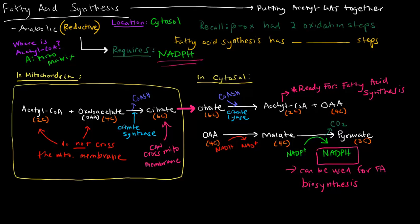These acetyl-CoAs are going to be put back together to be made into a fatty acid. They're going to need reductive power, which comes from NADPH. If you recall, beta-oxidation had two oxidation steps. Fatty acid synthesis has two reduction steps. In those two reduction steps, NADPH is re-oxidized back into NADP+.